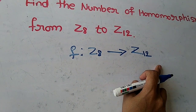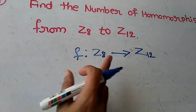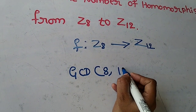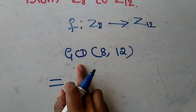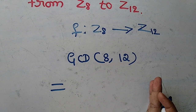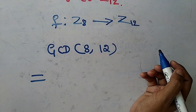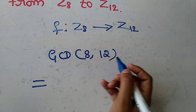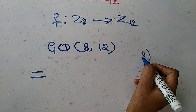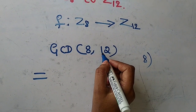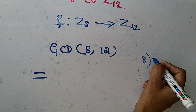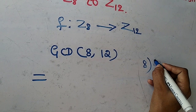Here our M is 8 and N is 12. The formula is GCD of M comma N, so we need GCD of 8 and 12. Using the division method, you keep the smaller number in the divisor place — here 8 is the smaller number — and the larger number, 12, in the dividend place.